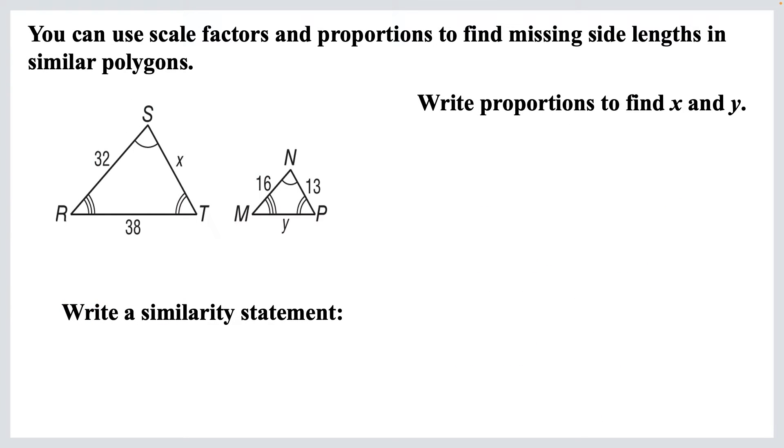So we can use scale factors and proportions to find missing side lengths in similar polygons. So we've got two triangles here. I'm going to tell you that they're similar. And we're going to write a similarity statement. So the similarity statement would be triangle RST is similar to triangle MNP. So we've got the big one on the left, small one on the right. We need to write proportions to find X and Y. Well, first we've got to start with numbers we know. So 32 corresponds with 16. And then X, its partner is 13. Those partners are what we use to set up their proportions. 32 over 16 equals X over 13. 32 over 16, big over small, equals X over 13, big over small. And then cross multiply. So 16 times X is 16X. 32 times 13. And then we divide both sides by 16, and you get X equals 26.